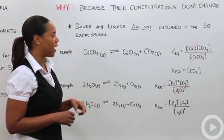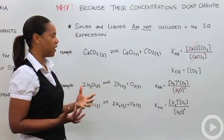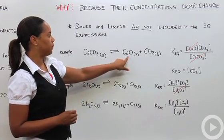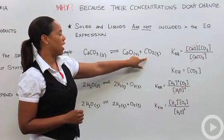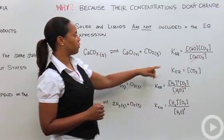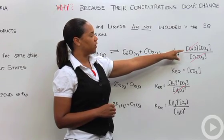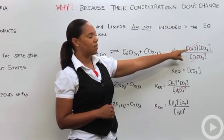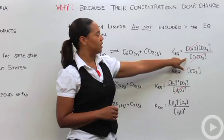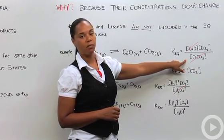If we were to write the equilibrium expression the way we're familiar with, we would write the product of our products over our reactants. So we'd have the concentration of calcium oxide times the concentration of carbon dioxide divided by the concentration of calcium carbonate.